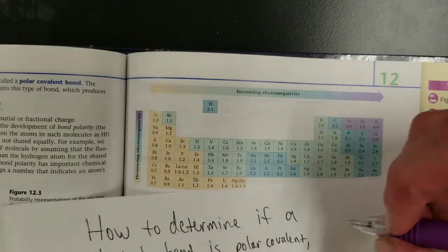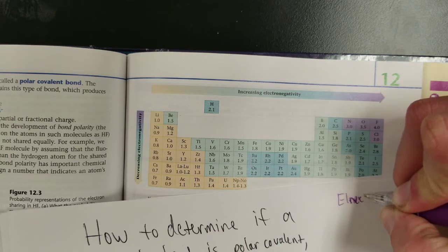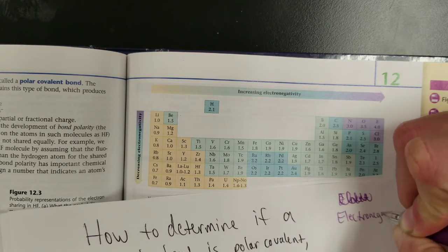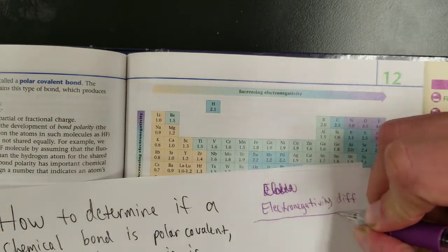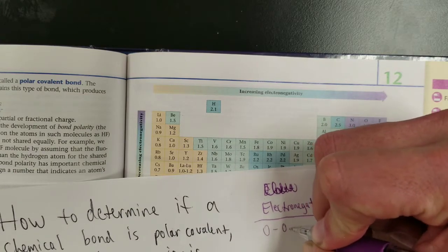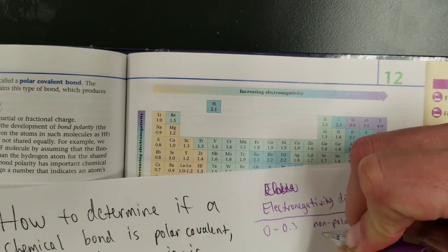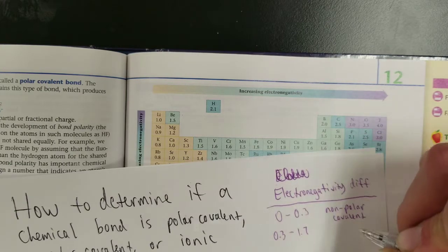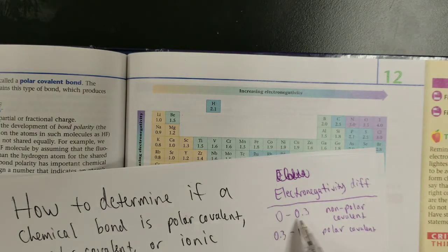Well, here's the thing. If we see electronegativity differences, they can tell us what kind of bond is going to happen. If it's a difference of 0 to 0.3-ish, that's non-polar covalent. 0.3-ish to 1.7-ish is polar covalent. This means they roughly attract the atom equally. A difference of this much means that one's attracting the electron more than the other.